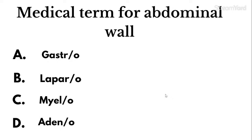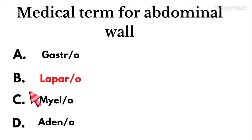Question twelve: Medical term for abdominal wall — gastro, lapro, myelo, or adeno? The answer is lapro. Gastro refers to the stomach, myelo refers to bone marrow or the spinal cord, and adeno refers to gland.